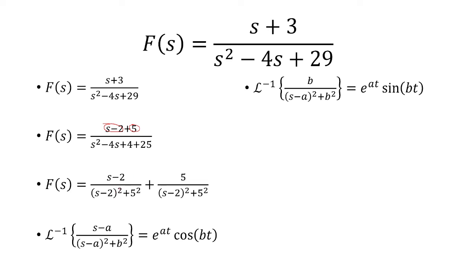Obviously, a is going to be 2, b is going to be 5. Plugging it in, we get the answer as e to the 2t times cosine of 5t plus e to the 2t times sine of 5t.